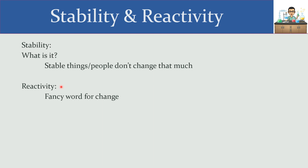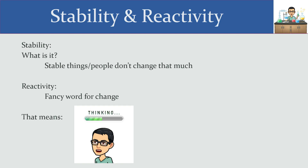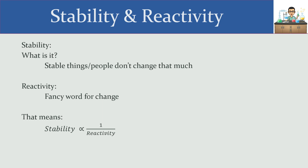The word reaction means we are looking at a particular change. So if stable things don't change that much, and reactivity indicates change, what is the relationship between stability and reactivity? That's right — they are inversely related. And that relationship is very important to understanding advanced topics in chemistry. Stability and reactivity are inversely related.